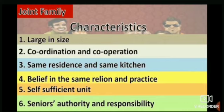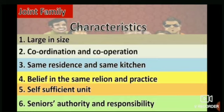The third characteristic is common residence and kitchen. Members of the joint family normally reside together under one same roof, though some members may reside separately for various reasons. Members eat the food prepared in the same kitchen. Members of the joint family also believe in the same religion and practice their worship, and religious beliefs are common in nature.